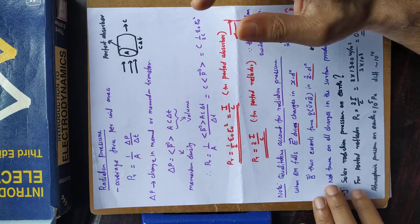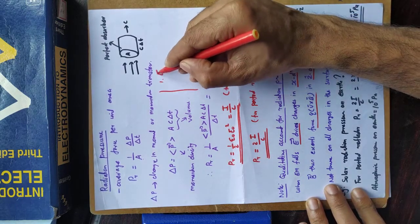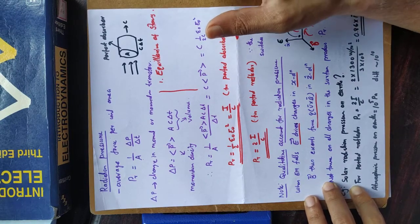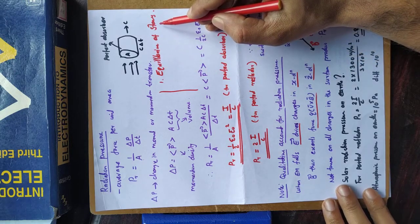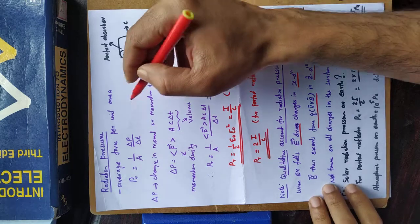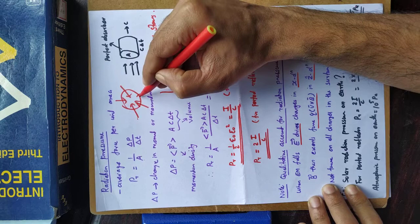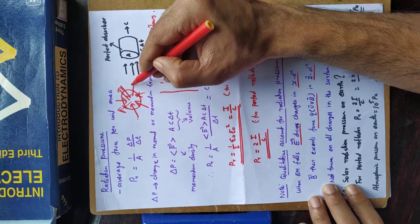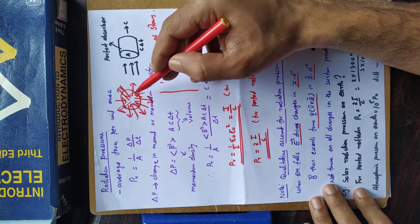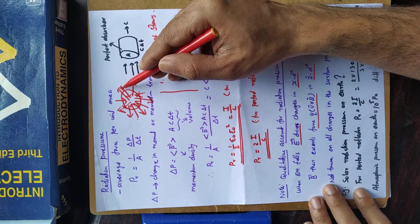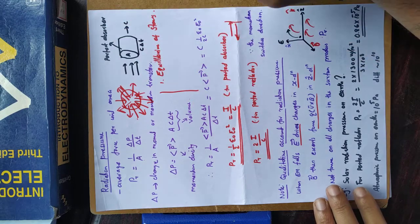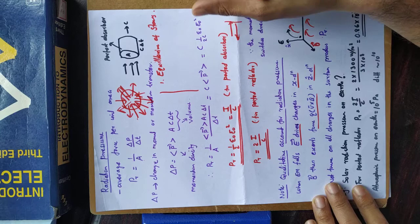Radiation pressure plays a role in the equilibrium of stars. Stars are spherical in shape because gravity acts towards the center, tending to collapse the star, and this is balanced by outward radiation pressure. Nuclear reactions produce radiation inside the star. Once the fuel is exhausted, radiation pressure decreases and gravity dominates, collapsing the star. Depending on its mass, the remnant becomes a white dwarf, neutron star, or black hole. So radiation pressure is crucial in stellar formation, development, and evolution.